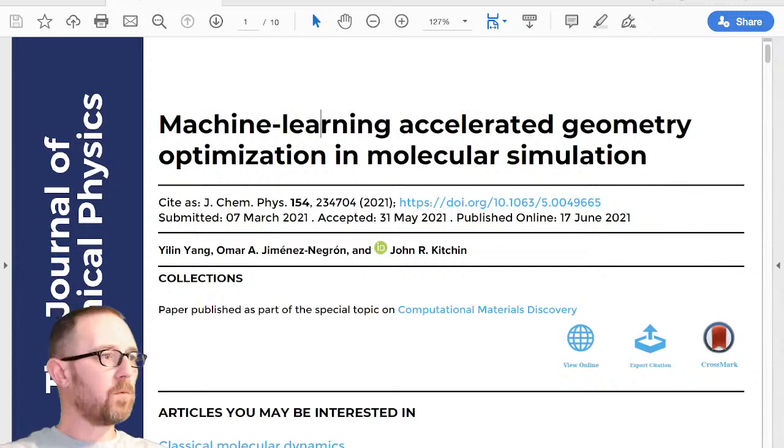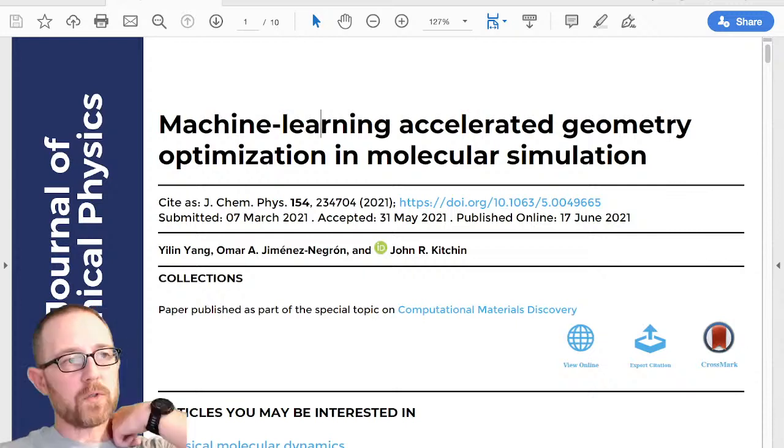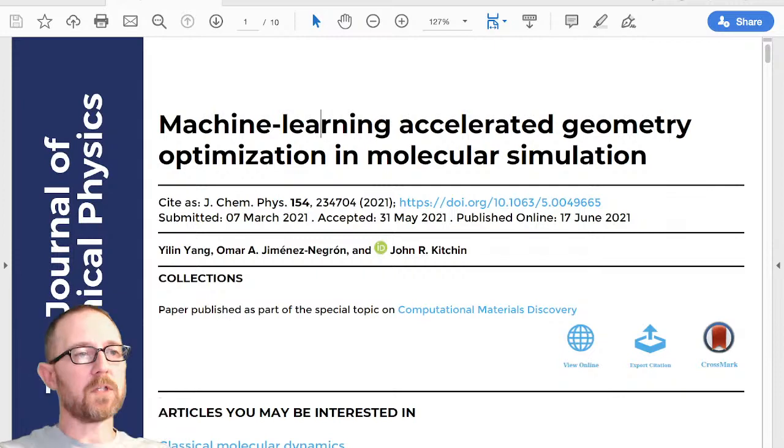And so what we are going to show you in this paper is how we use machine learning to build a surrogate model in the DFT, and that allows us to run the surrogate model for many steps much faster, as long as we know it's accurate. That's the trick. If it's not accurate, it will go off into some space that is not interesting. And so we have a way of estimating uncertainty, and that will give us a way to leverage machine learning in this work.